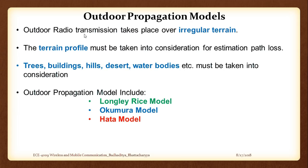Outdoor radio transmission takes place over irregular terrain. We will also go to indoor models — the Longley-Rice, Okumura, and Hata are outdoor models, while attenuation factor models and the Ericsson model are applicable only for indoor environments. For outdoor, the terrain profile must be taken into consideration to estimate the path loss, including trees, buildings, hills, or desert as obstacles.